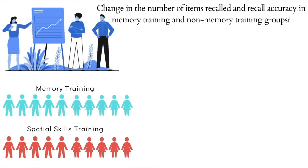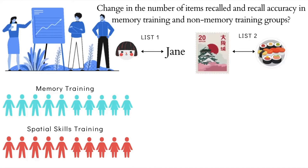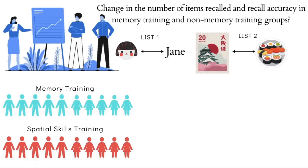The participants are then given a task wherein they have to study and learn two different lists. In list 1, the participants have to learn 12 pairs of names and faces. In list 2, the participants are instructed to learn different cities and famous cuisines or dishes found in those cities — 12 pairs as well. Following this, the participants from both groups are subjected to a pre-training measure, wherein we subject them to a memory recall test.